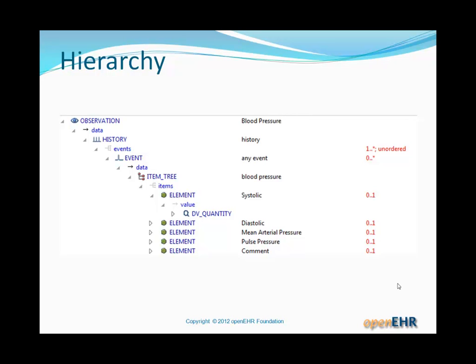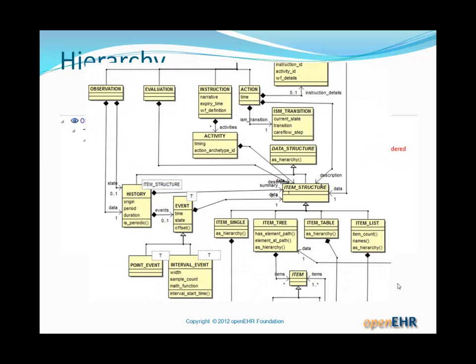Here's another typical hierarchy based on the Observation class in OpenEHR. Reading down the left-hand side: Observation, data, property, history, events, and so on — eventually getting down to elements for blood pressure: systolic and diastolic. The systolic element constraint is further opened out into a quantity constraint. The class diagram is shown there. More classes are involved, but the point is that eventually everything turns into hierarchy.